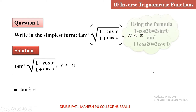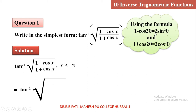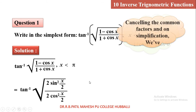Dear students, please recall the formulas: 1 minus cos 2θ is 2 sin²θ, and 1 plus cos 2θ is 2 cos²θ. I need 1 minus cos x and 1 plus cos x. So write 1 minus cos x as 2 sin²(x/2) — this is just using the half angle — divided by 1 plus cos x, which is 2 cos²(x/2). We have 2 and 2 cancelled, and sin² upon cos² will be tan². So you get root of tan²(x/2).